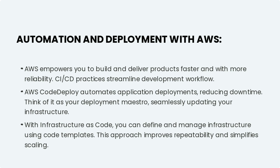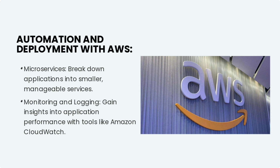With infrastructure as code, you can define and manage infrastructure using code templates. This approach improves repeatability and simplifies scaling. For types of AWS services for DevOps: you have compute services for managing your applications, storage services for storing and retrieving data, networking services for connecting resources, and developer tools for building and deploying applications.